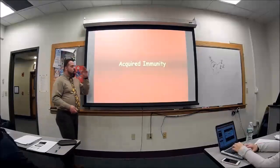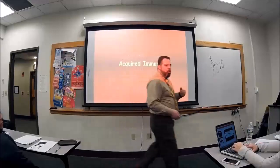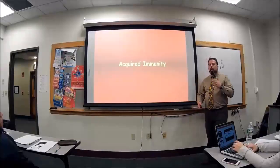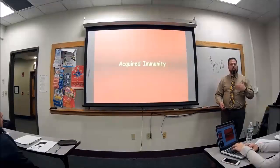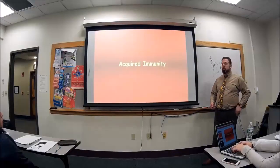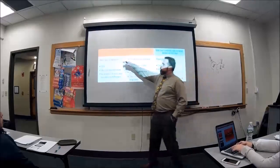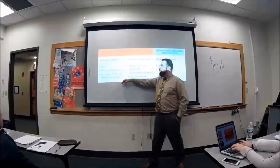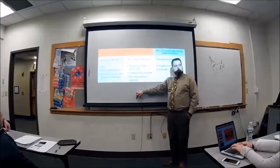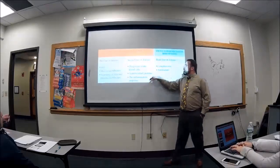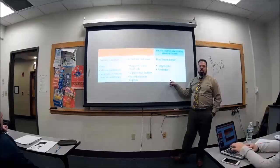Now we've got the acquired immunity, and it's a little bit different. The master comes out and can recognize what's going on, and he's going to determine what to do with it. So here's our picket fence, the first line of defense. This is our Fido the dog. And now you've got the master that comes out.